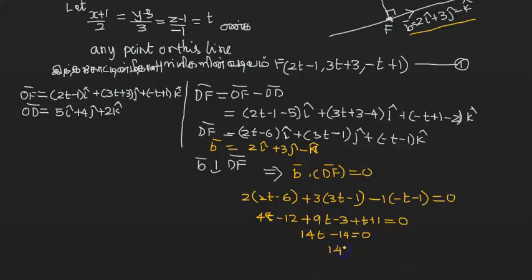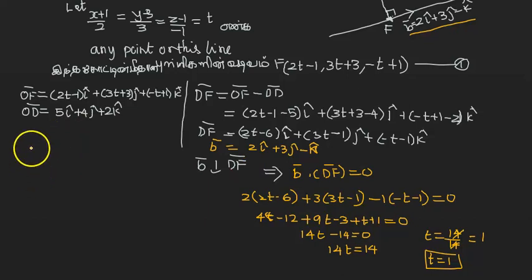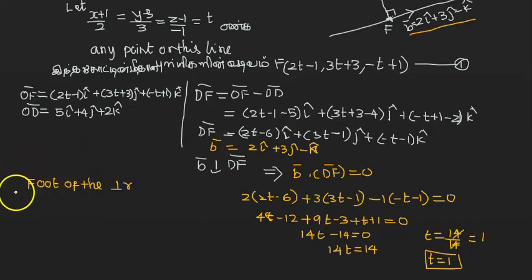14t is equal to 14. t is equal to 14 by 14. This is 1. t is equal to 1. Therefore, foot of the perpendicular: t is equal to 1. Foot of the perpendicular is equal to 1. 1 is equal to 1.